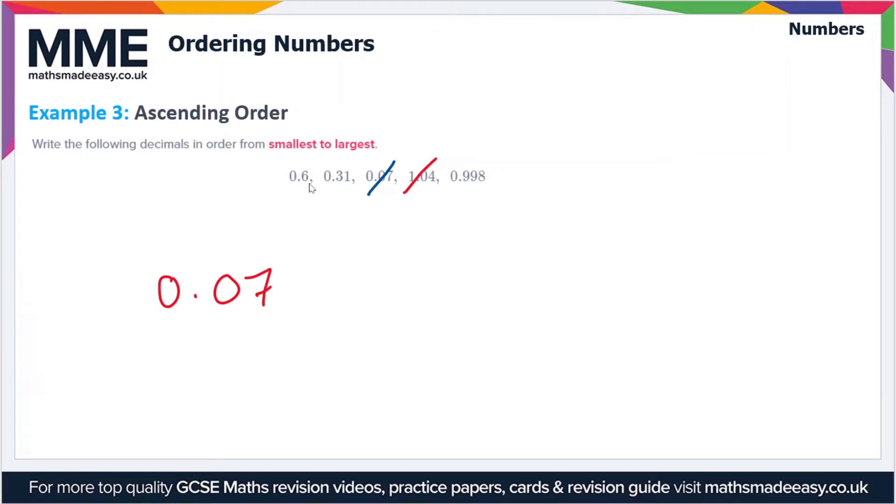Let's cross that out. Now we'll consider the other three that begin with zero. The second digits are 6, 3, and 9, so 3 is smallest, making 0.31 next. Cross that off. Now we have 0.6 and 0.998. The six is smaller than the nine, so 0.6 is smaller than 0.998. Cross these two off, and that leaves the one we crossed off at the start, which was the largest: 1.04. These decimals are all now in ascending order.